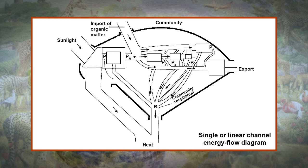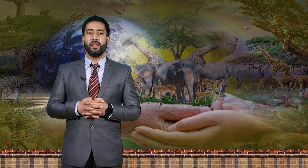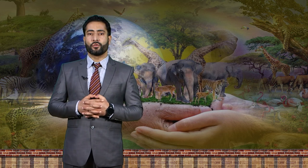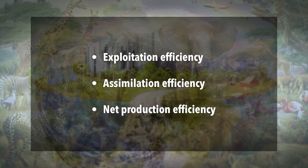Gross primary production (GPP) refers to total photosynthetic carbon fixation. Autotrophic respiration (RA) equals GPP minus NPP. Net primary production (NPP) equals GPP minus RA. Heterotrophic respiration (RH) refers to respiration of consumers and decomposers. Ecosystem production, i.e. net ecosystem production (NEP), is equivalent to GPP minus total ecosystem respiration (RE). The three major steps in energy flow correspond to exploitation efficiency, assimilation efficiency, and net production efficiency.